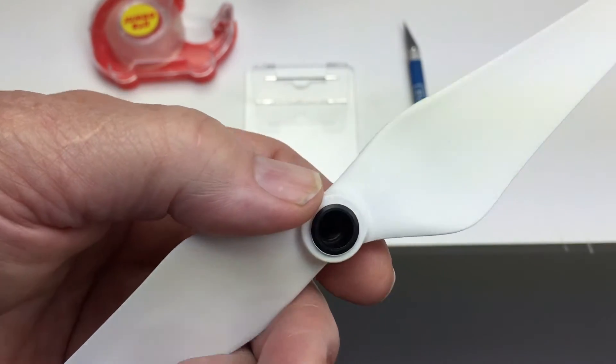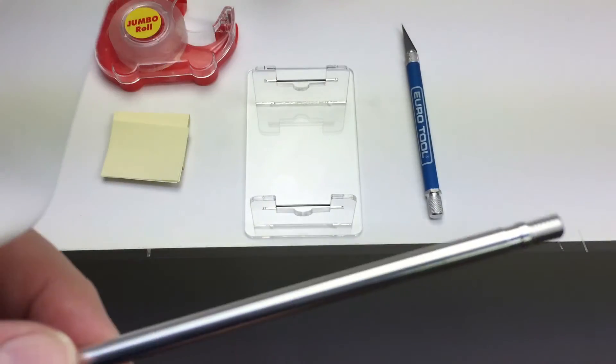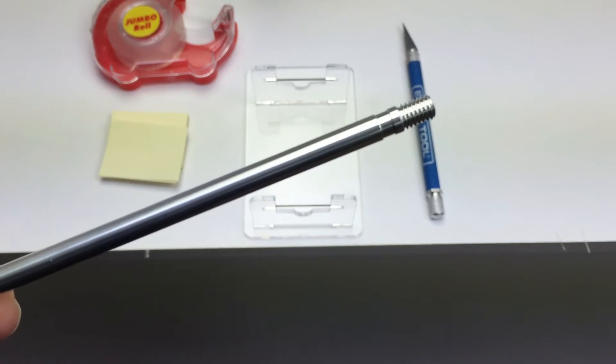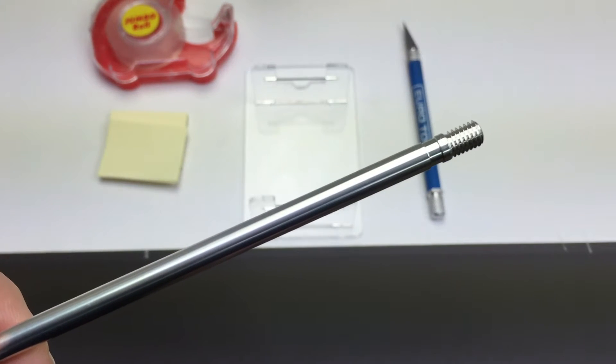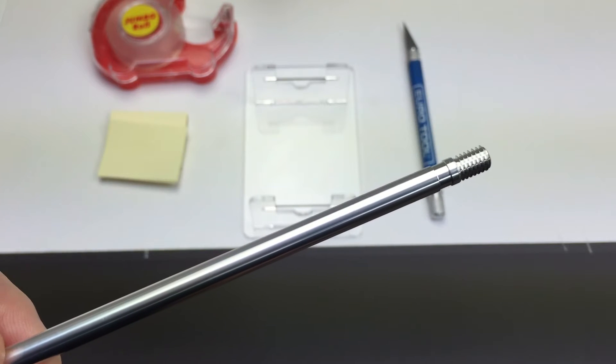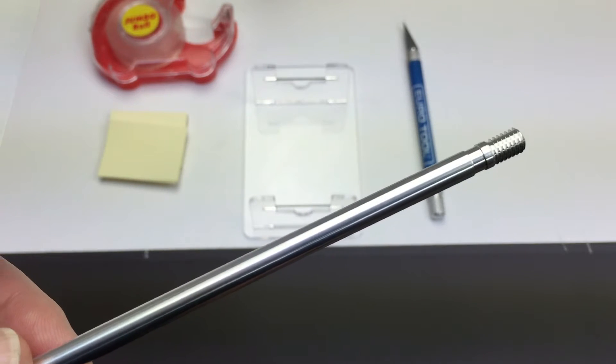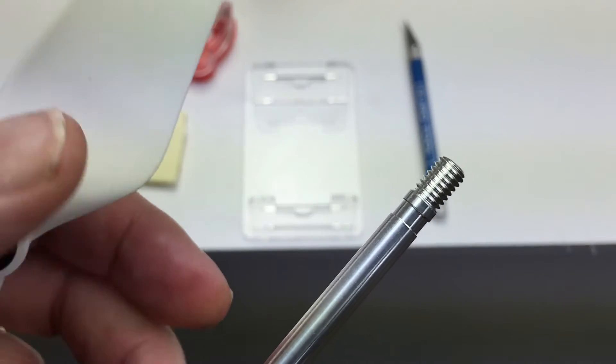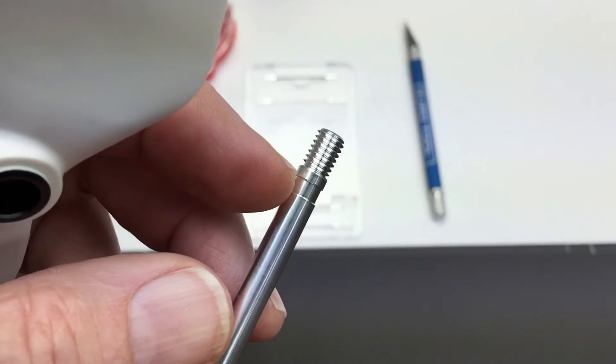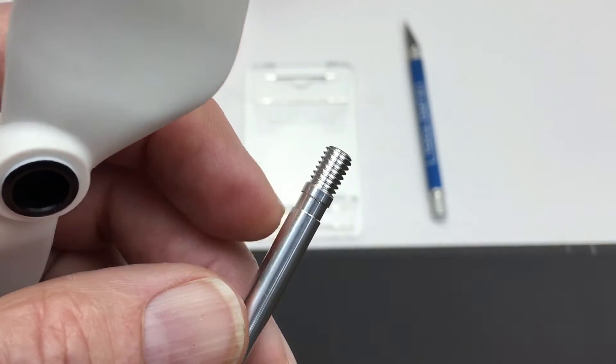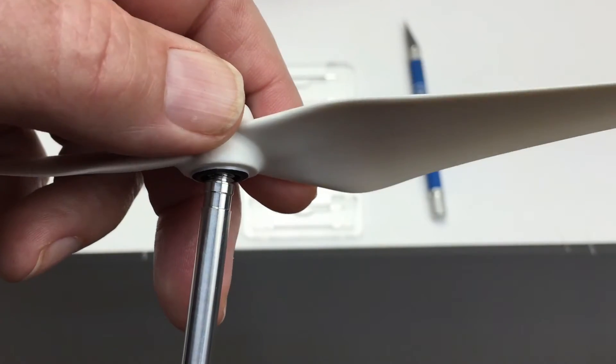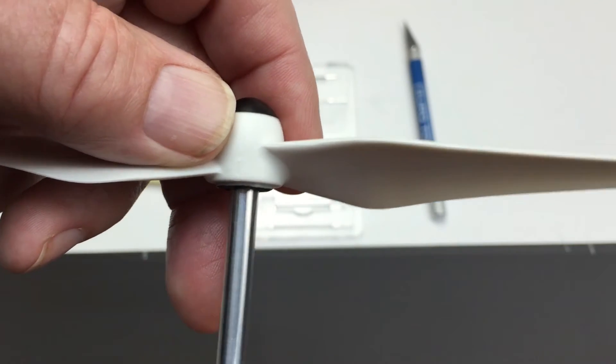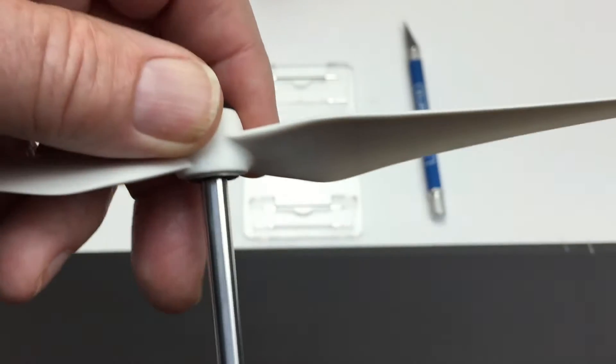There are several rod versions. This particular one is for the DJI Phantom one and two, eight and nine inch props. The left hand counterclockwise thread is designated by a groove in the end. Simply screw the rod into the prop itself and tighten it down.